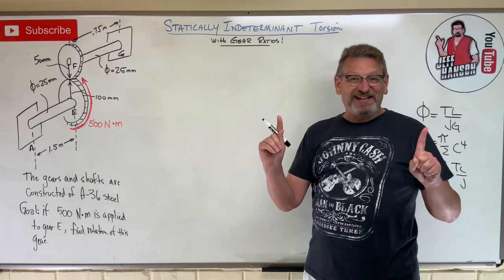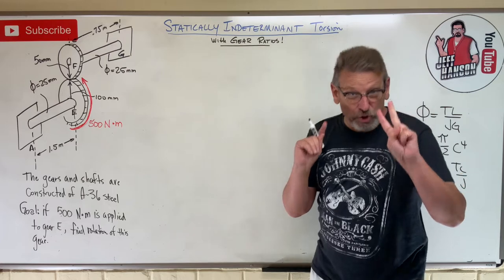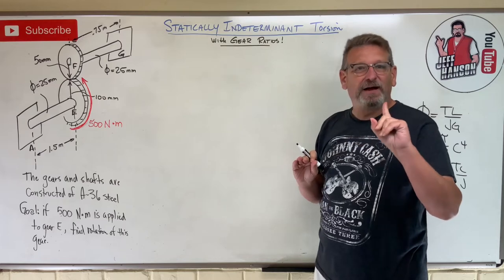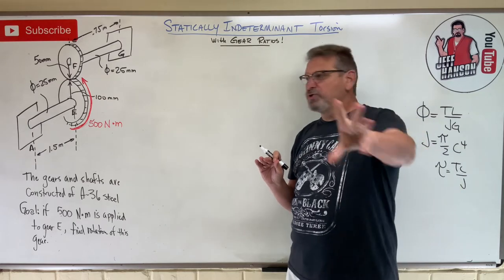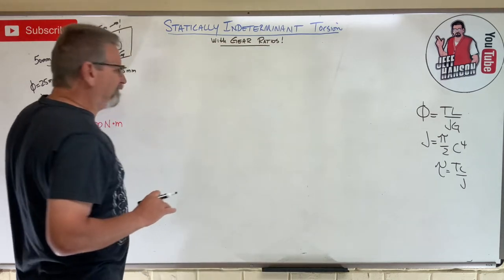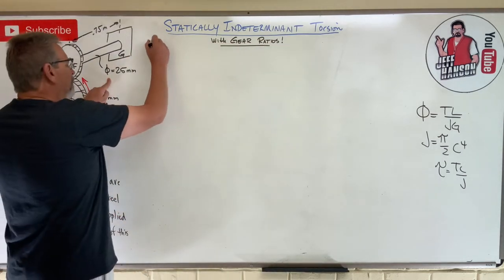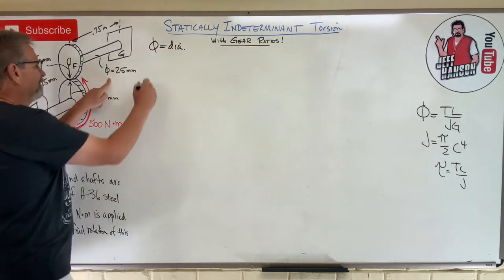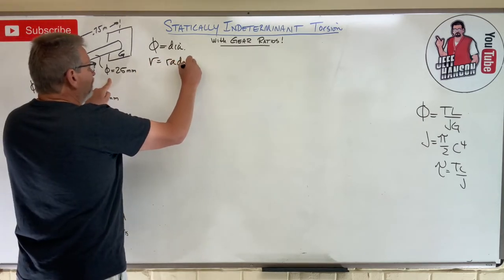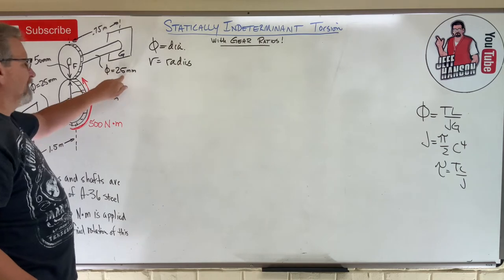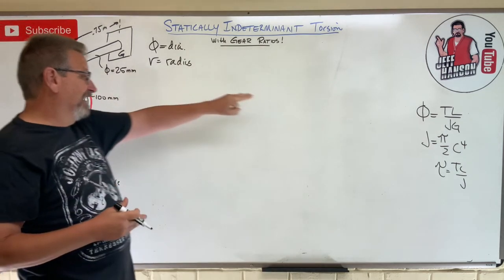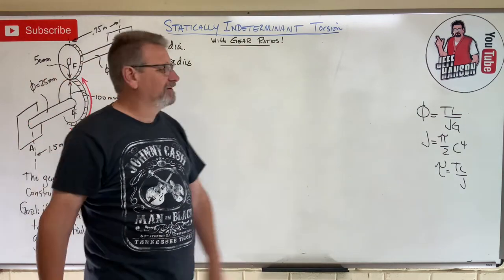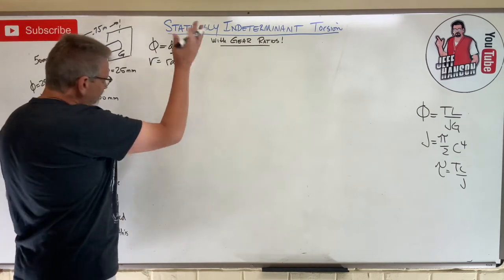Hey, welcome back. Statically indeterminate problem number two, but this one with gear ratios. I'm sorry if last video confused you — I used φ (phi) which I typically use for diameter, so φ equals diameter to me. Then I had a problem with B equals 25 millimeters calling it diameter, and another video calling it angle of twist. I'll try to use DIA for diameter so I don't confuse you with angle of twist.